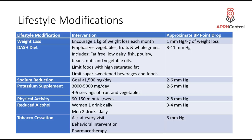The DASH diet can drop blood pressure approximately 3 to 11 points. It emphasizes vegetables, fruits, and whole grains, and includes fat-free or low-fat dairy, fish, poultry, beans, nuts, and vegetable oils. You do limit foods high in saturated fat and limit sugar-sweetened beverages and foods. Sodium reduction is also huge — the goal for sodium intake should be less than 1,500 milligrams per day, and decreasing dietary sodium can drop pressure by about 2 to 6 points.